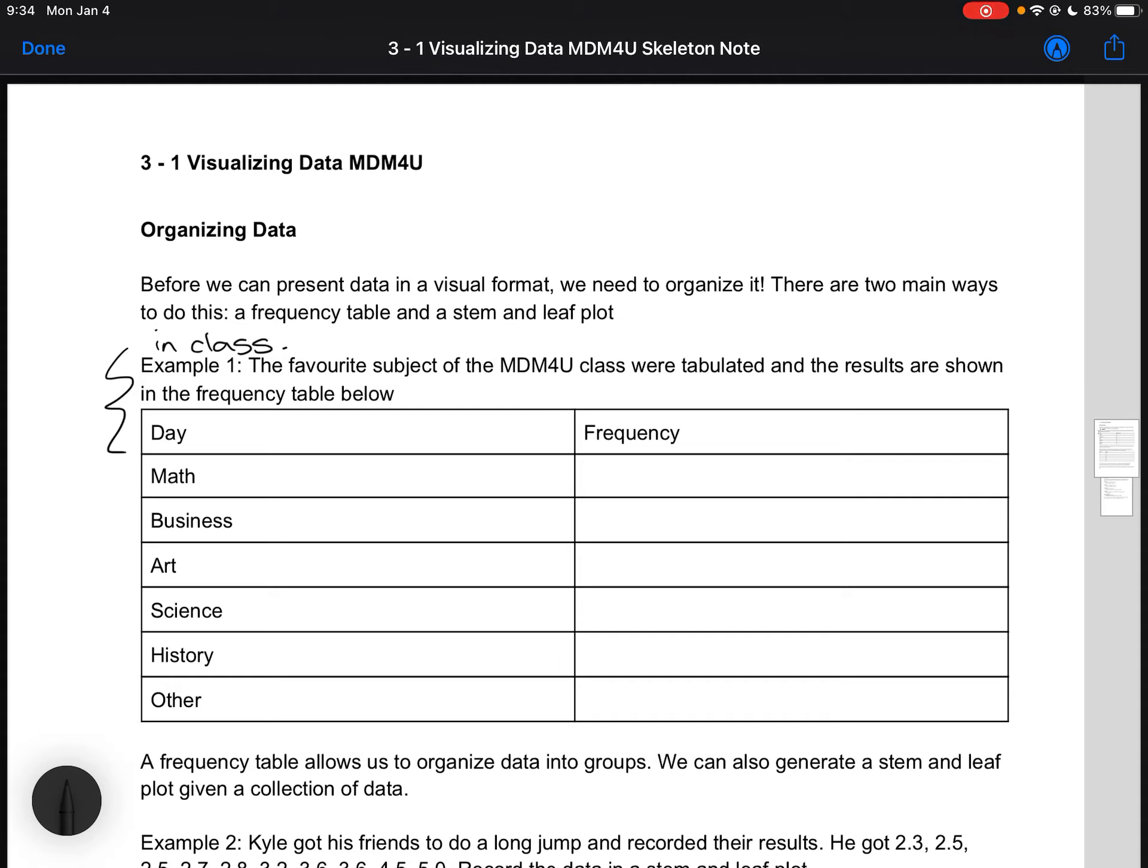We're going to figure out our favorite subjects of the students in our class, tabulate them, and then put the results in the frequency table below. So we might have three people that liked math, eight people that liked business, two that liked art.